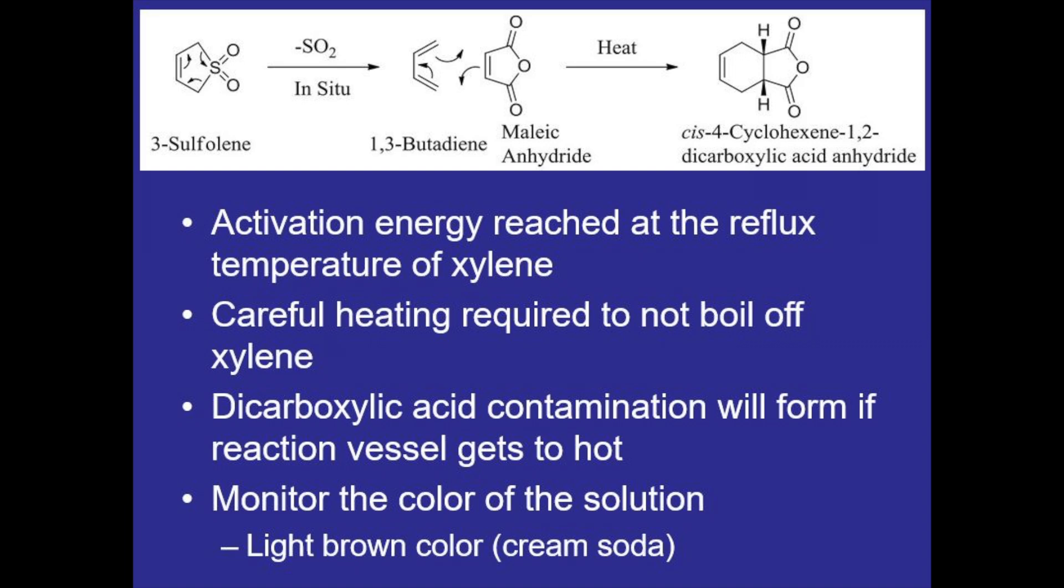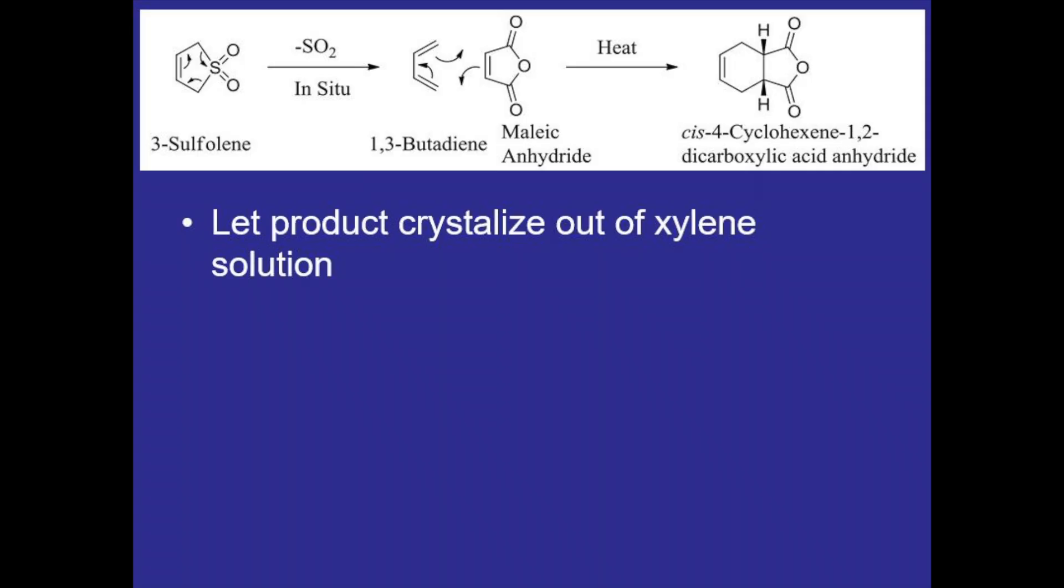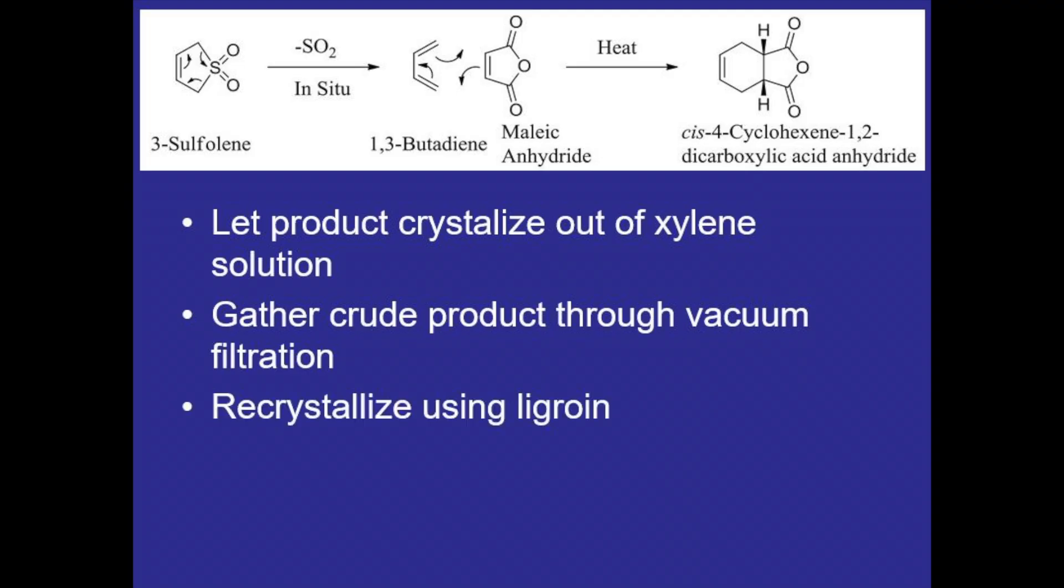Once the reaction is complete we'll let the product crystallize out of the xylene solution and we'll be adding some toluene to help with this process, and then we'll gather the crude product using vacuum filtration and recrystallize it using ligroin.